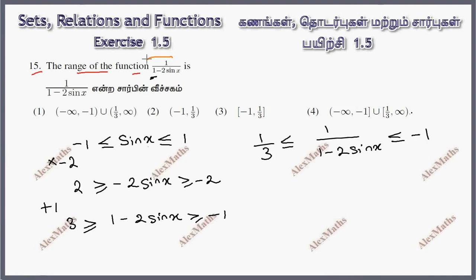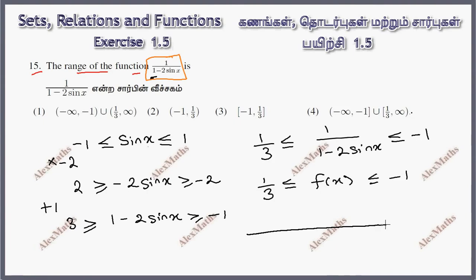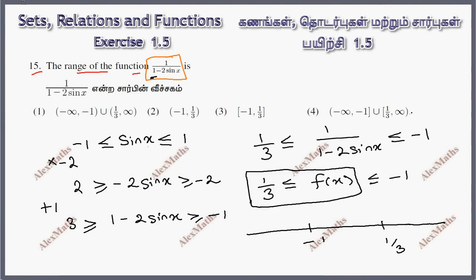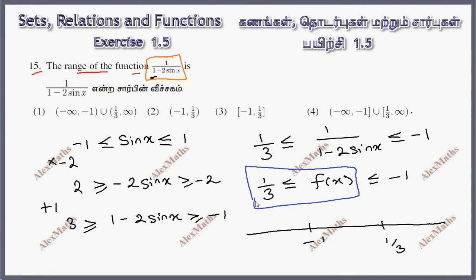Taking the reciprocal, 1 over (1 minus 2 sin x), the bounds become 1 over 3 at one end and 1 over minus 1, which equals minus 1, at the other end. So the function values are either greater than or equal to 1 over 3, or less than or equal to minus 1.